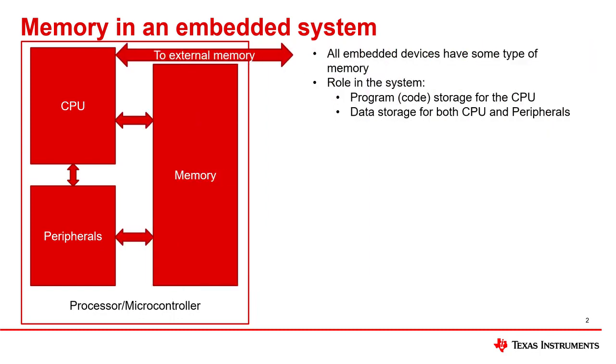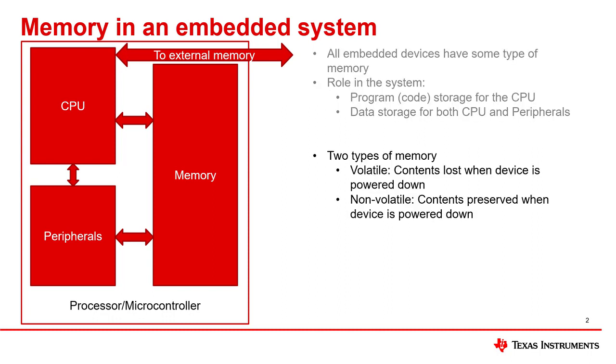Finally, there must be some type of memory that stores the data for the device to use. The basic role of the memory in an embedded system is to either contain program code that the CPU will execute or to store data variables for both the CPU and peripherals. Memory can be either internal to the device or externally accessed through the device's pins. We can further classify the memory by how it behaves when the device does not have power.